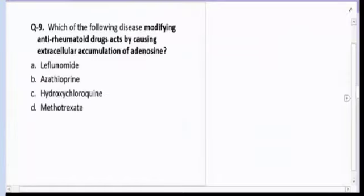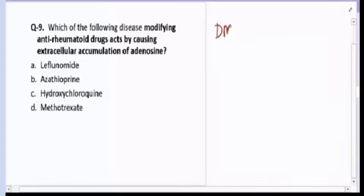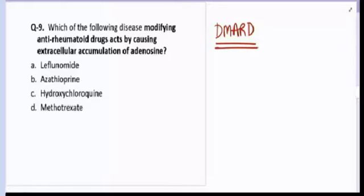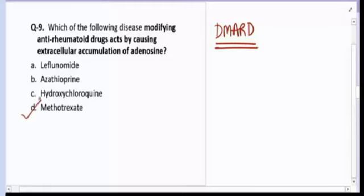Question number nine: which disease-modifying anti-rheumatoid drug (DMARD) acts by causing extracellular accumulation of adenosine? The options are leflunomide, azathioprine, hydroxychloroquine, and methotrexate. The correct answer for question number nine is methotrexate — the drug which causes accumulation of adenosine outside the cell.